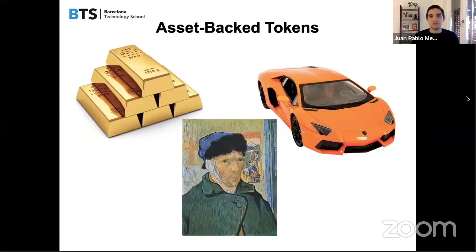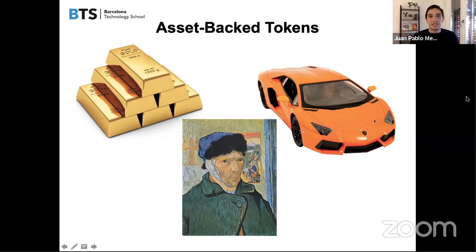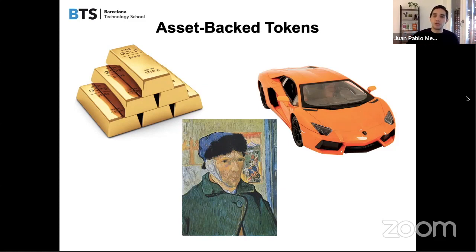Asset-backed tokens are similar to stable coins in that they are backed by something, but in this case backed by different assets. For example, JP Morgan is working on a crypto asset backed by gold. You can also have cars represented on the blockchain — collectible cars — or paintings. For example, you have a physical Banksy artwork and say the owner is whoever holds this token, or these 10 tokens represent the property of the Banksy, so whoever has one token has one-tenth of that piece of art. These are tokens backed by actual physical assets.